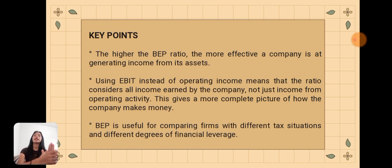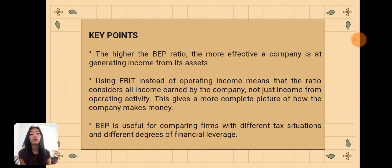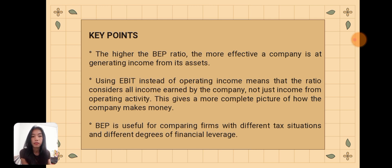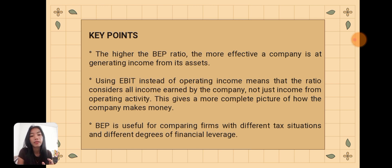The second key point is that using EBIT — earnings before interest and taxes — instead of just operating income means the ratio considers all income earned by the company, not just income from operating activities. It also includes non-operating activity values, giving a more complete picture of how the company makes money.